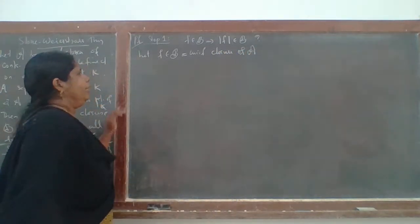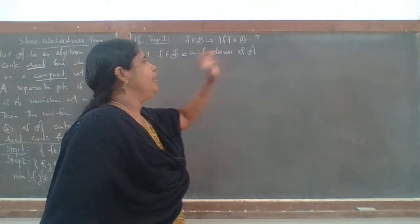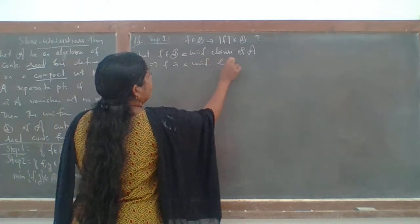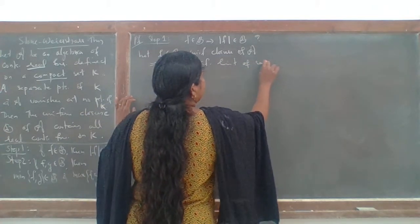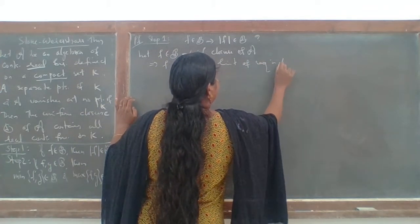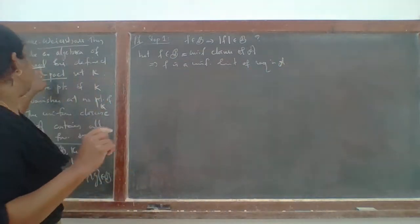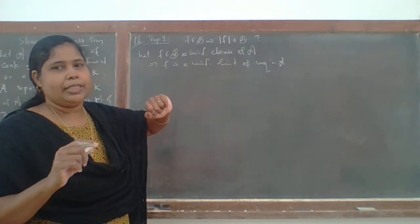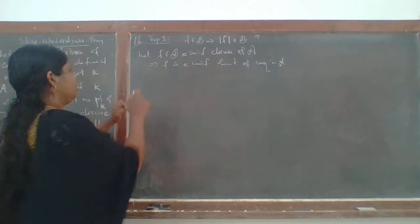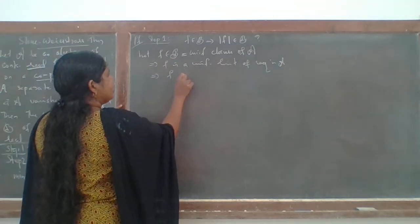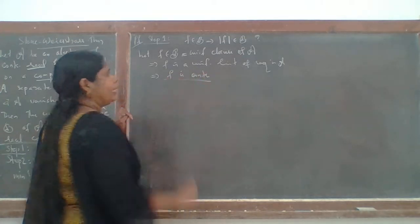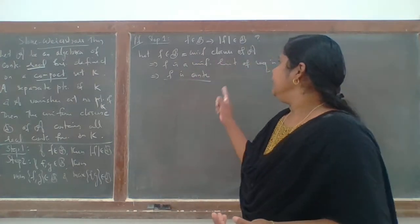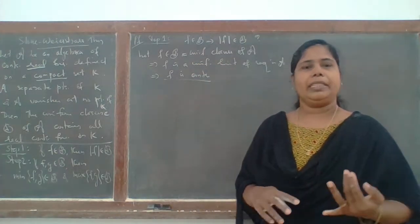So F is a uniform limit of a sequence in A. This implies F is a uniform limit of some sequence in A. Now A contains real continuous functions. Being a uniform limit of a sequence of continuous functions, F also must be continuous. So every element in B is continuous. We have an algebra containing continuous functions; then its uniform closure must also contain continuous functions.